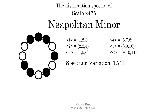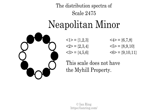The spectrum variation is the sum of all the widths, divided by the number of tones. The spectrum variation of this scale is 1.714. Since the variation is greater than 0, this indicates that the scale is not perfectly even. The highest spectrum width is 2; since this is greater than 1, we know that this scale is not maximally even. If every spectrum has exactly 2 specific intervals, we call that the Myhill property. This scale does not have the Myhill property. Since the generic interval ranges overlap, this scale is an improper scale.